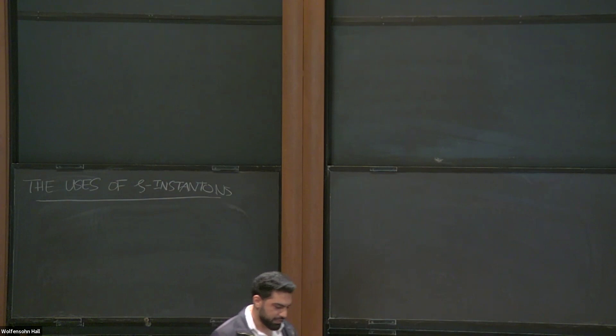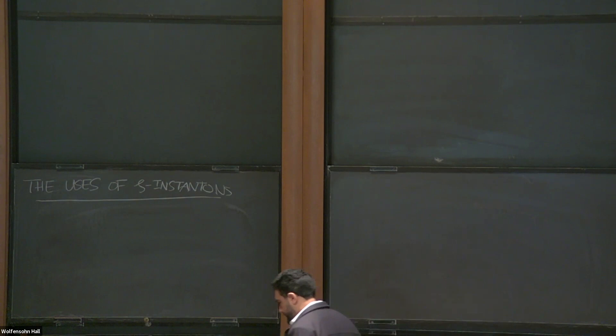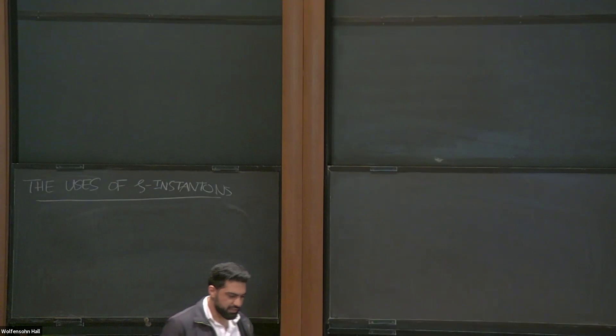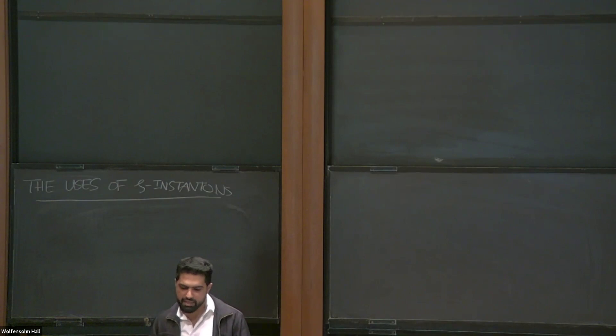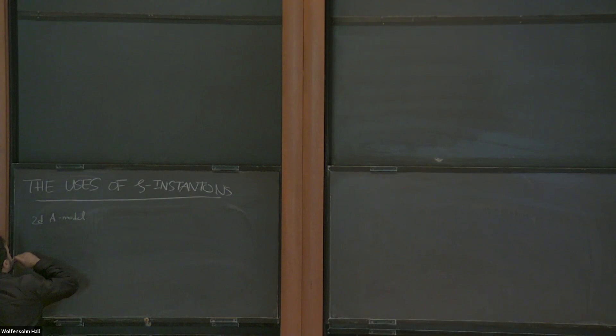This is going to be in supersymmetric field theory. Instantons play a special importance in theories with some number of supersymmetries. One reason is that you can take the supersymmetric theory and topologically twist it, often if there are enough supersymmetries. When you do that, the only kinds of things that matter, it turns out, are the instantons in the different field theory. Some standard examples of this phenomenon are the two-dimensional A-model — a theory with four supercharges where you twist with respect to one of them.